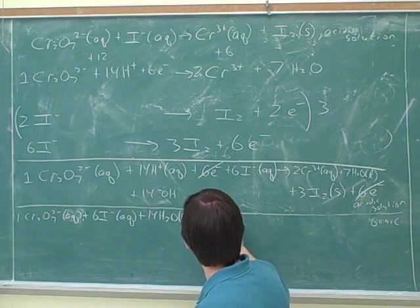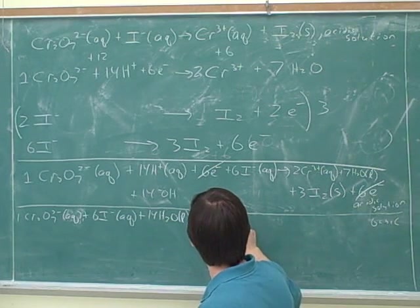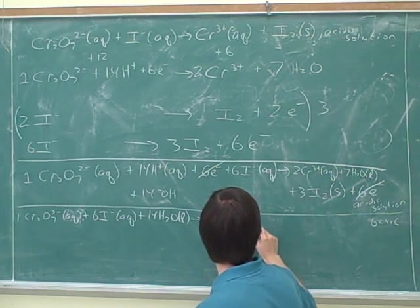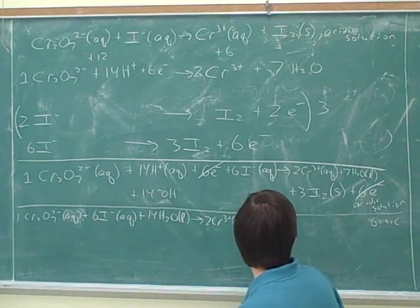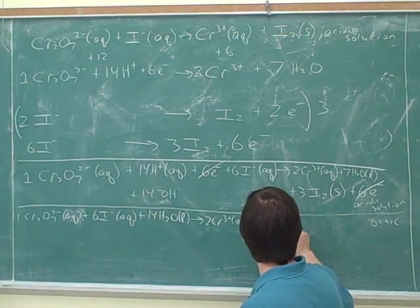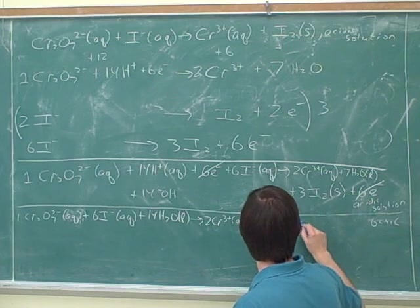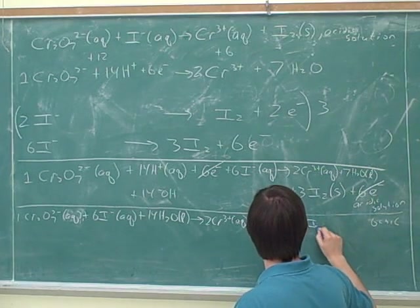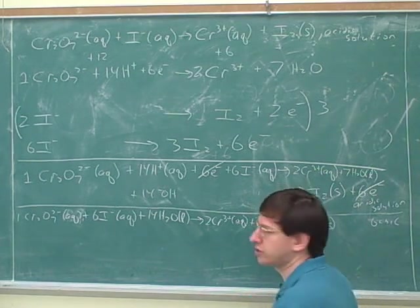And then on the right side, we have two chromium V pluses, plus we have our seven waters, plus we have the three I2s.